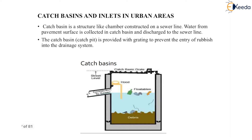Next is catch basins and inlets in urban areas. A catch basin is a structure like a chamber constructed on a sewer line. Water from the pavement surface is collected in the catch basin and discharged to the sewer line. The catch basin is provided with grating to prevent the entry of rubbish into the drainage system, so that it does not get choked.